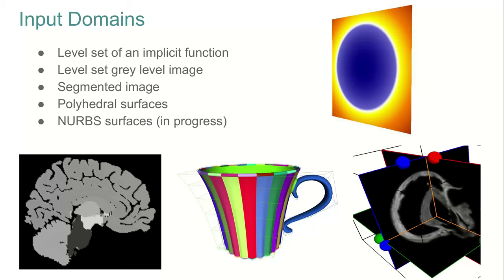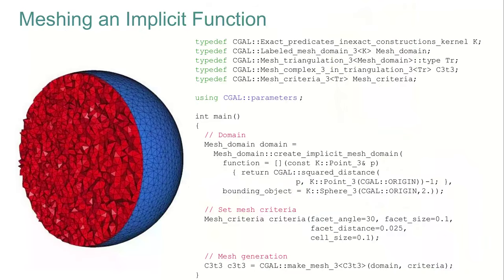Let's go over all the different kinds of domains we can mesh. Here is an example for meshing an implicit function. I'm creating a domain which consists of a function that defines a sphere, defined using a lambda function. Then I impose criteria on the mesh — quality on the face angle, the face size, and the distance to the input function — and pass all that to the function generating the mesh.